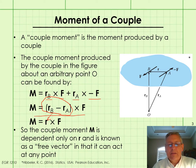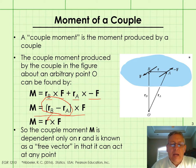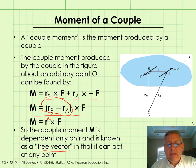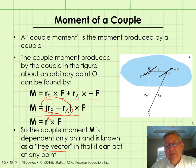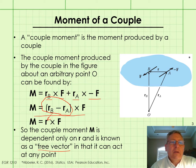What this means is that our couple moment M is dependent only on R, the position vector between the two forces that make up the couple. The couple moment M is known as a free vector in that it can act at any point on the body without the external effect changing. That's probably not intuitive, and we're going to see that some more, but you need to think about what a free vector is and become comfortable with it.